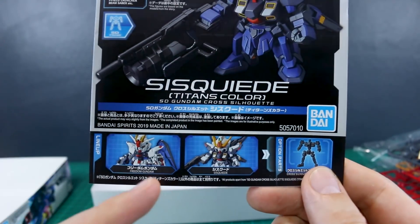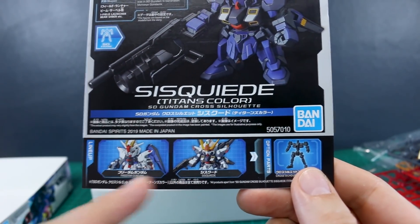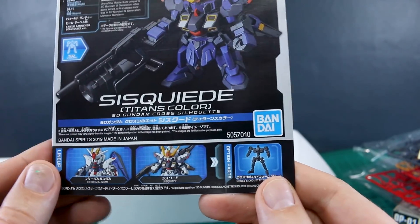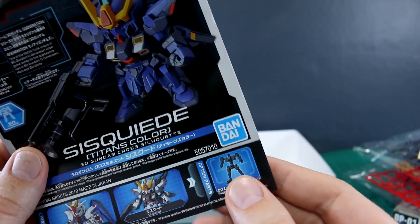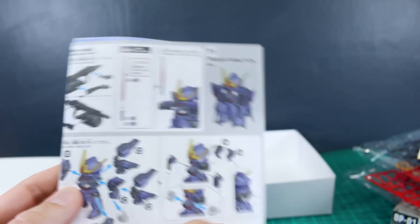Down here on the bottom, there is some other ones here in the line, of course, the Freedom and the regular Sisquede, and then the option parts of the CS frame. Here is showing the gray version. I wanted to get the gray version, but I could only get my hands on the white version for the time being, so whatever, it really doesn't matter. It's just the color of that.